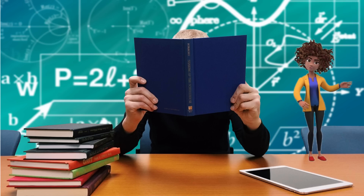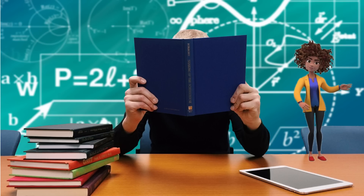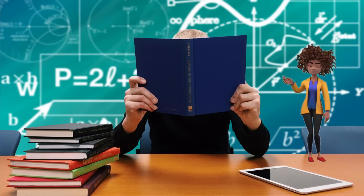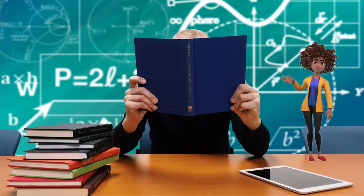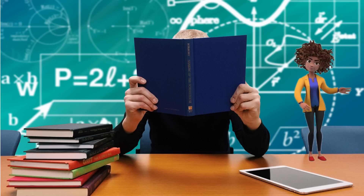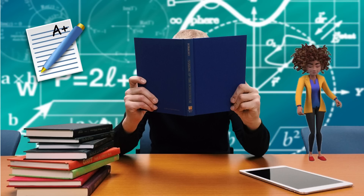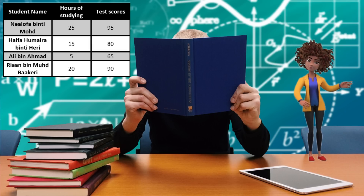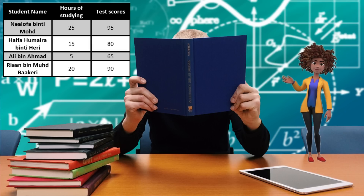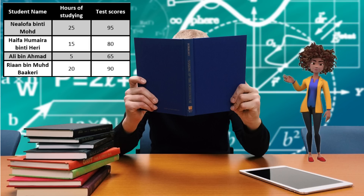In many studies, we measure more than one variable for each individual. For example, if you say that students who study more make better grades, you are really hypothesizing that there is a positive relationship between one variable, studying, and another variable, grades. Given such data, we begin by determining if there is a relationship between these two variables — as the values of one variable change, do we see corresponding changes in the other variable?